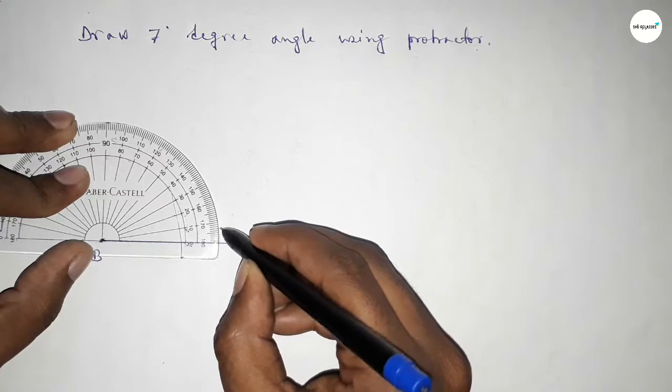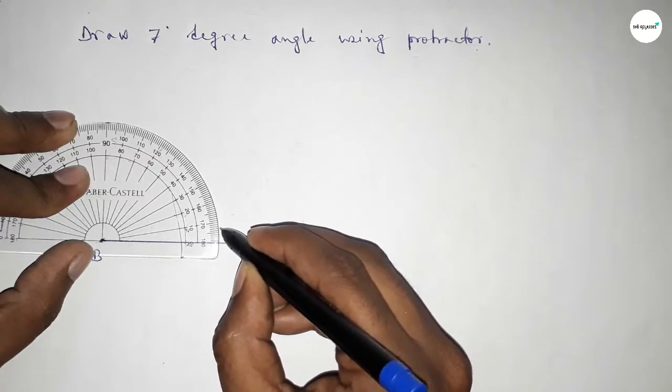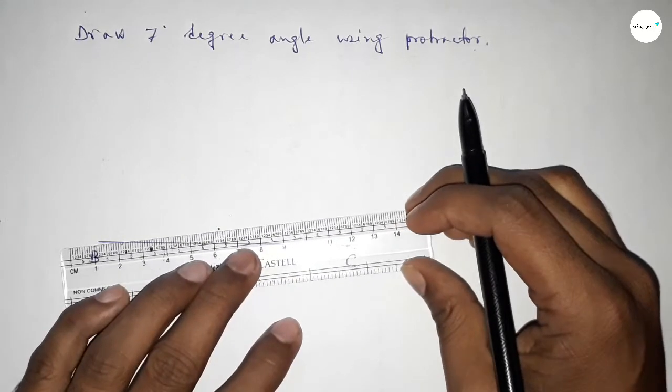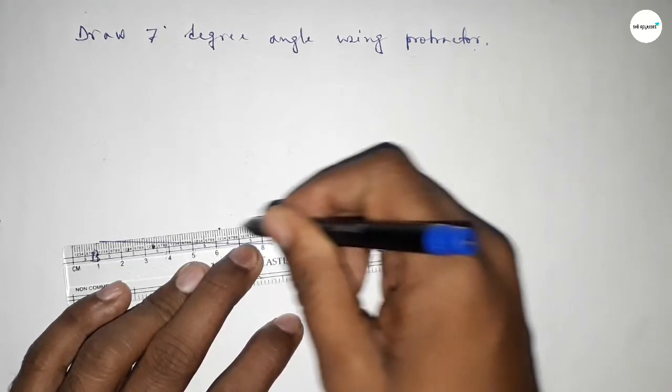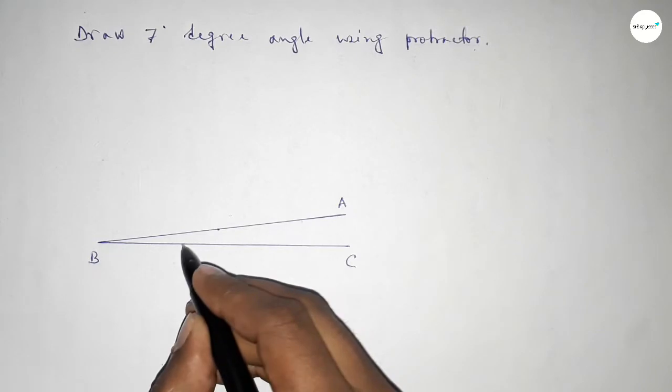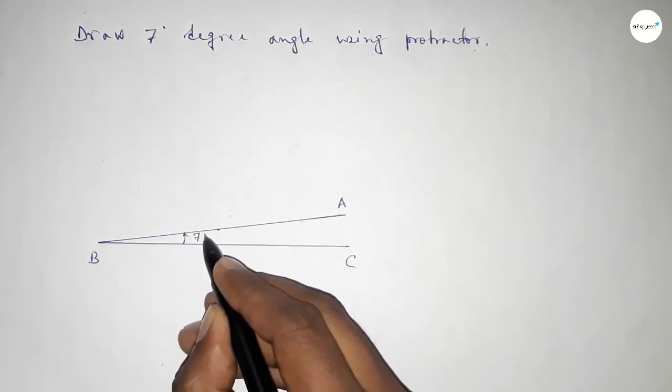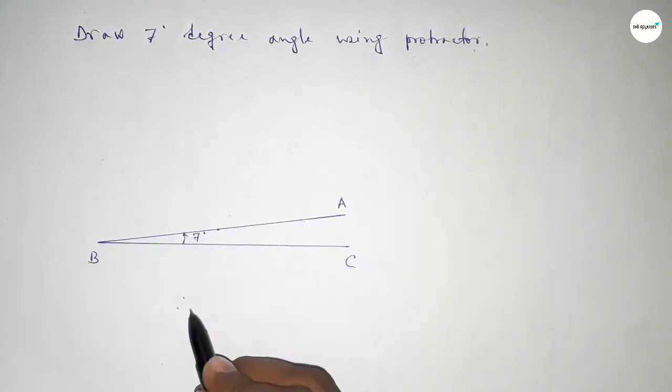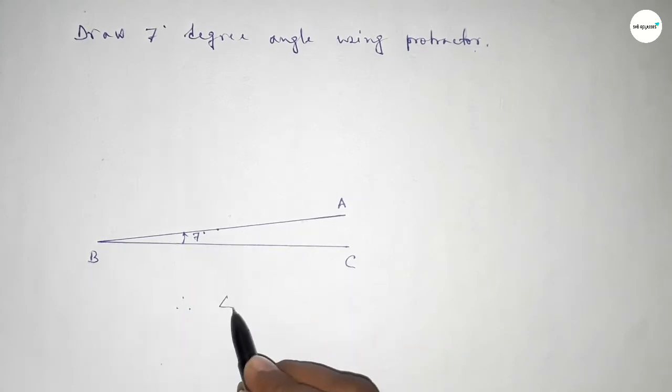Next, join this to get a seven degree angle. So joining this and taking here a point. So angle ABC up to this is seven degrees. Therefore, angle ABC equals seven degrees.